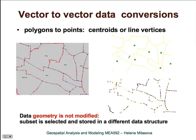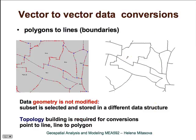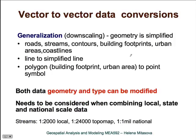For example, you can have a city represented as an area or as a point. Or you can convert polygons to just lines. Sometimes such representation may be useful if we are more interested in the outline of a certain area than handling the area itself.